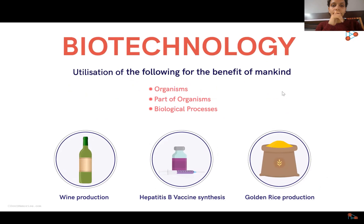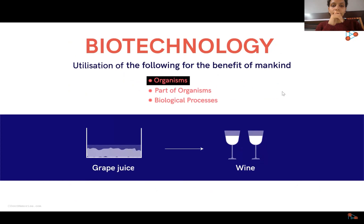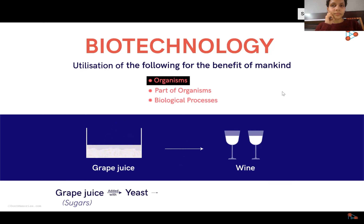Wine is usually made from grapes. How can grapes, which are fruits, get converted to a beverage like wine? This is where the microorganism named yeast comes into play. It feeds on the sugars present in grape juice and releases alcohol and carbon dioxide as byproducts. Here, a complete organism is used for processing grape juice and converting it into wine. This was the first part of the definition.